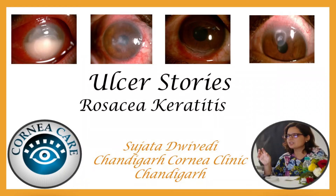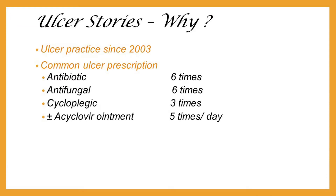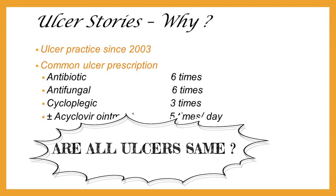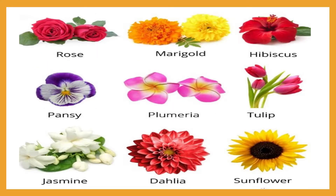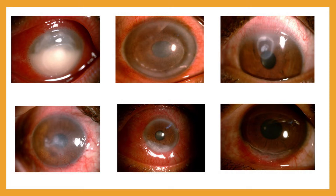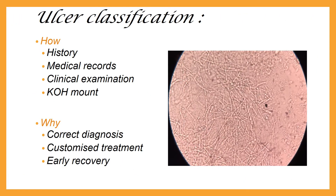Welcome to Ulcer Stories. I am starting this series because in my ulcer practice, I come across a common prescription for most ulcers. But are all ulcers the same? Just as all flowers are not merely colored petals, we make an effort to identify them. The same approach is needed for ulcers. All ulcers are an infiltration in the cornea, but we can classify the majority. For this, we need to listen to the patient's history, pay attention to clinical features, and do a basic microbiological workup — KOH — to rule out fungal etiology, because it is a very common cause of ulcer. This approach helps in customizing our treatment and moving beyond the routine of treating every ulcer with the same protocol.